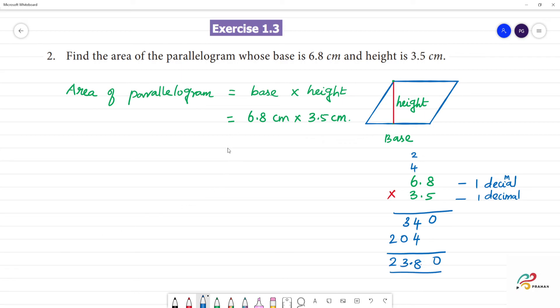What is the answer? 23.80 cm times cm is square cm. Otherwise, we can write 23.80 cm square. This is the area of the parallelogram.